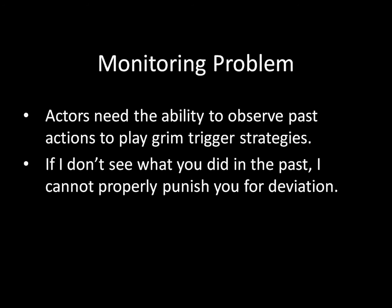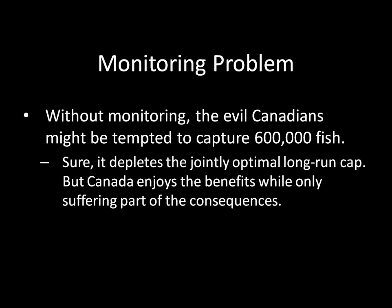An important hidden assumption in grim trigger strategies is that actors need the ability to observe past actions. If they can't observe what has happened in the past, then they can't actually play a grim trigger strategy — there's nothing that's going to be triggering the grim trigger. If I don't see what you did in the past, then I can't properly punish you for deviation. So without this sort of monitoring, those Canadians up north might be tempted to capture just a little bit more fish than the treaty allows — going up to 600,000 instead of 500,000. This depletes the jointly optimal long-run cap. Because Canada disproportionately enjoys the benefits today by capturing those extra 100,000 fish, while both the United States and Canada suffer the long-run consequences together, Canada ends up in a better position by slightly cheating on the treaty.